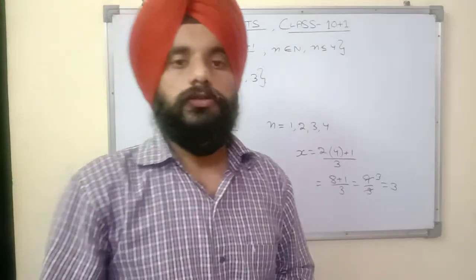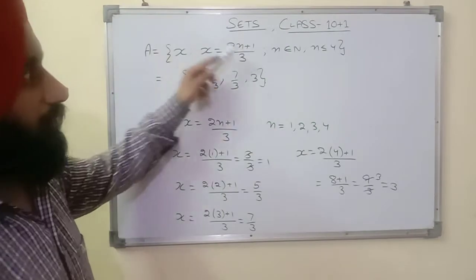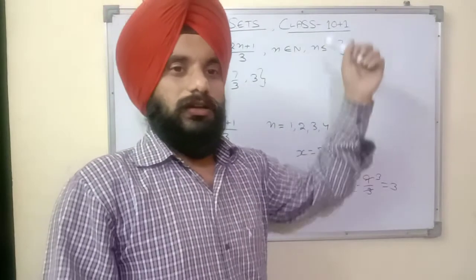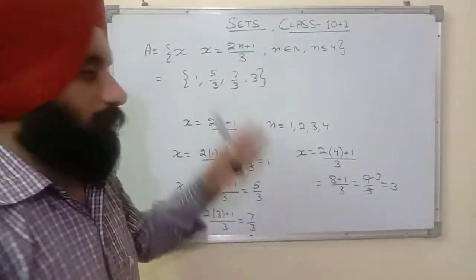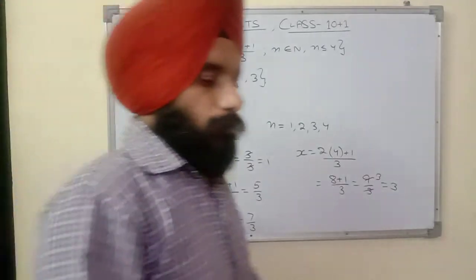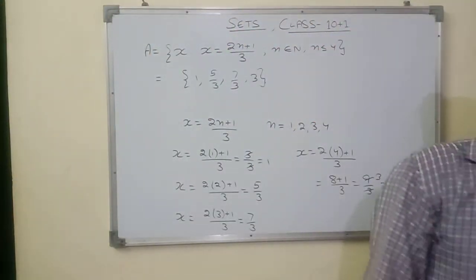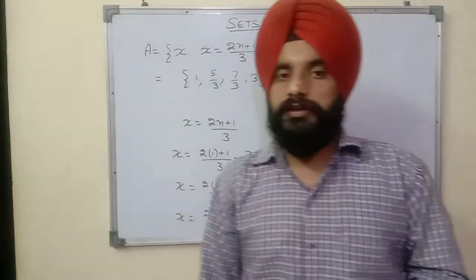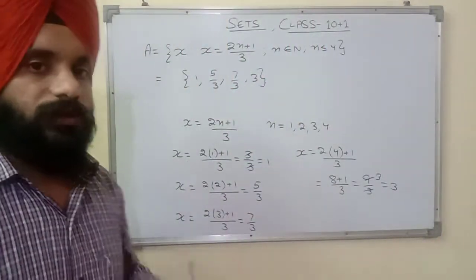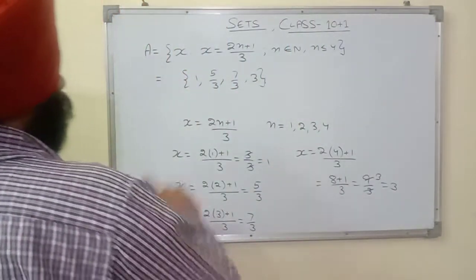This is how we convert the set builder form into roster form. The set was given in set builder form and its roster form is {1, 5/3, 7/3, 3}. Now we will do another example in which the set will be given in roster form and we have to convert it into set builder form.